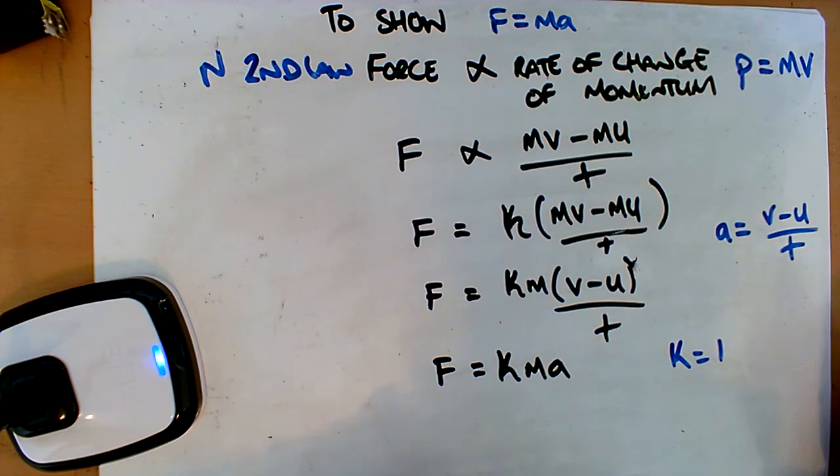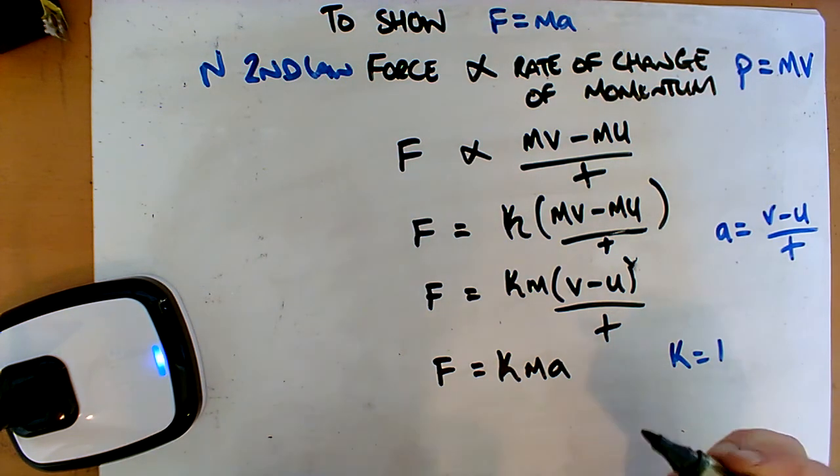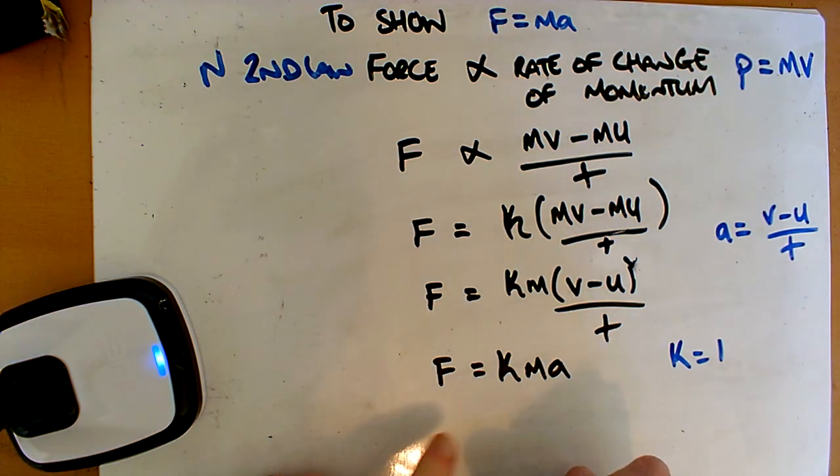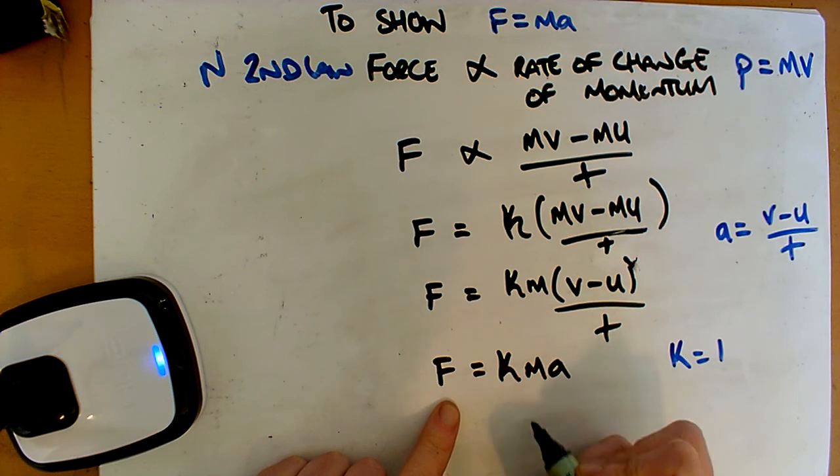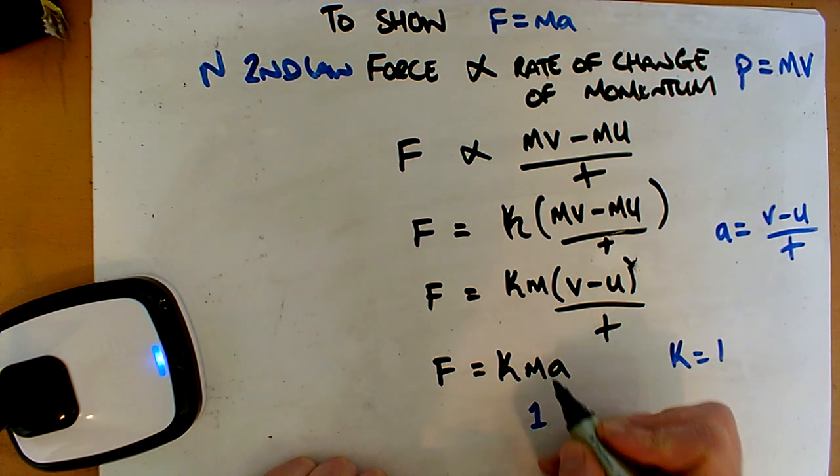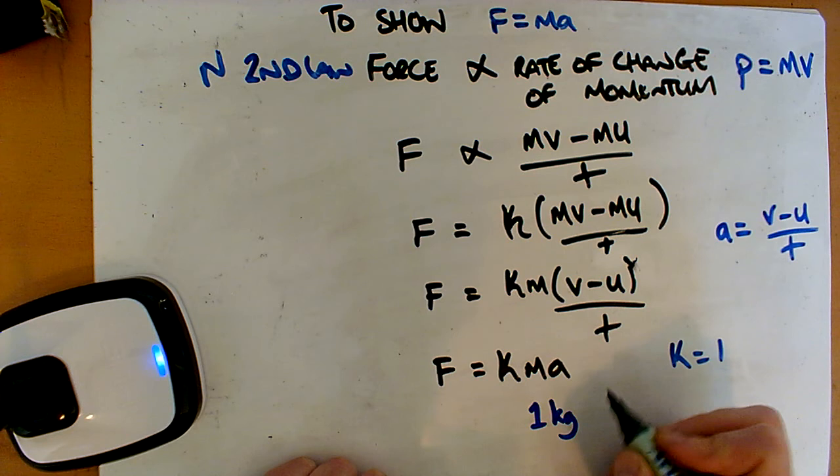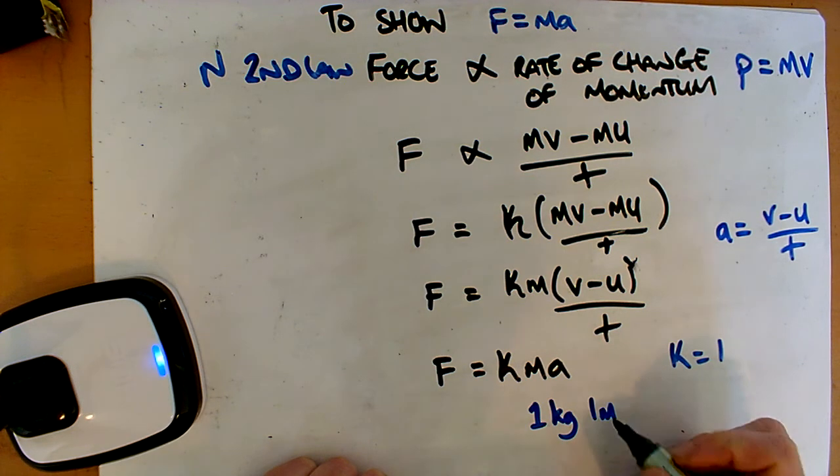Why can we do that? Well, because what we're going to do is we're going to define what a Newton is. Our F, we're just going to say that if we have a mass of 1 kilogram and we have an acceleration of 1 meters per second squared.